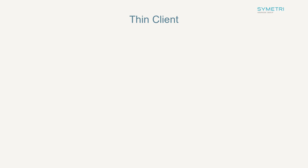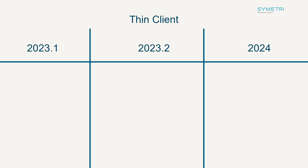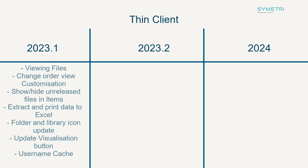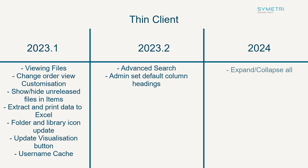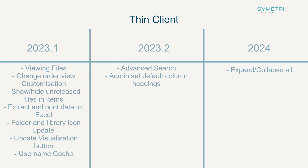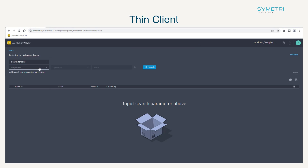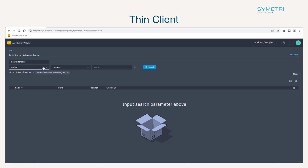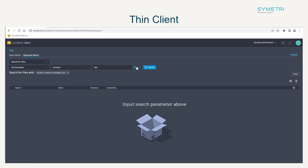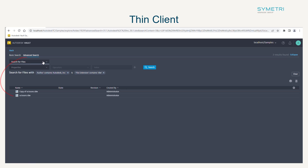The final new feature we are going to look through is the updates to the thin client. Some of these updates came out in the point release for the 2023 version. The first and most valuable update is the advanced search feature. This is going to allow read-only viewers quick navigation of the environment and also filter through properties to narrow the search. You can add multiple criteria to the search function as well as search for files, items, or change orders.